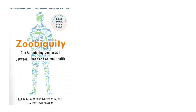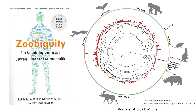Thus, studying non-human animal models can teach us a whole lot about human health. For example, all multicellular organisms are at risk of developing cancer. The phylogenetic tree to the right displays how common cancer mortality risk is amongst a variety of different mammal species. Using other species as a model for studying cancer, we can gain a better understanding of human cancer and even generate new hypotheses that we can test in humans.